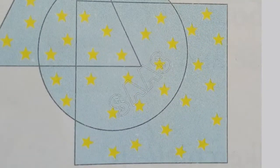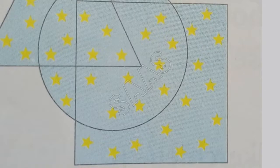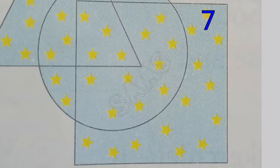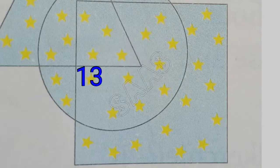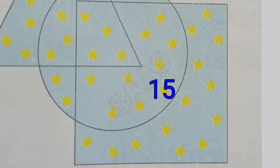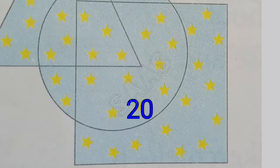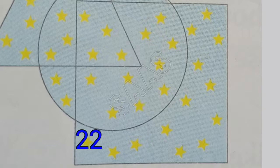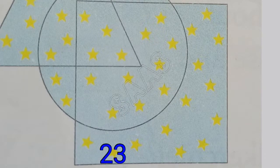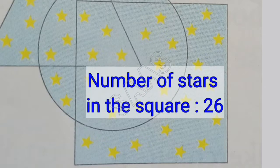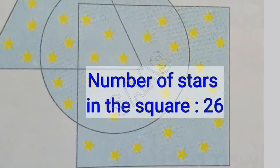Now count the number of stars in the square. There are 26 stars in the square.